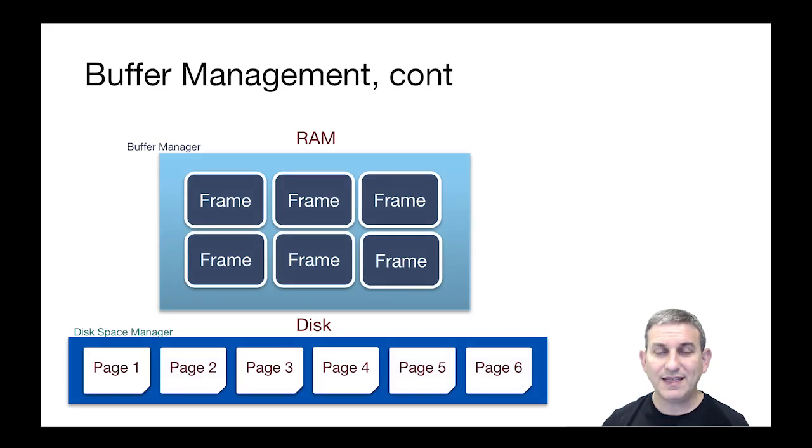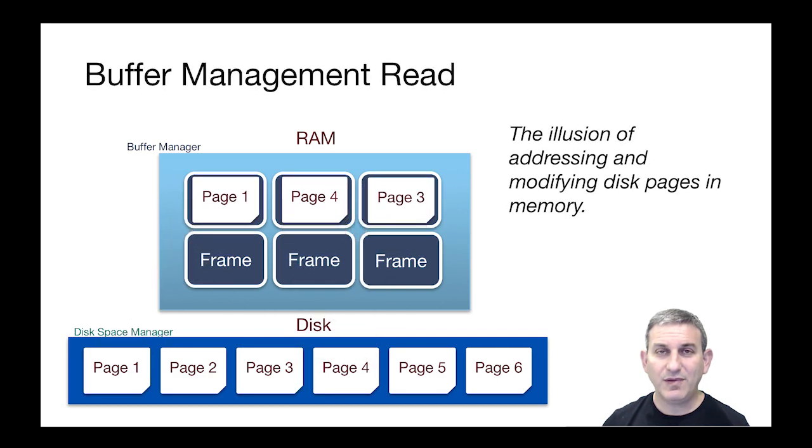The way to think about a buffer manager is that in RAM it manages what's called a buffer pool, which is a set of page-sized extents in memory called frames. It's the job of the buffer manager to provide the higher levels of the system the illusion that they're addressing and modifying disk pages that exist in RAM, but it's actually going to move pages from the disk into and out of frames in this buffer pool.